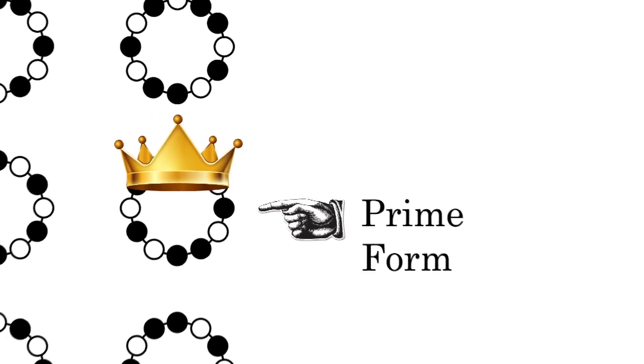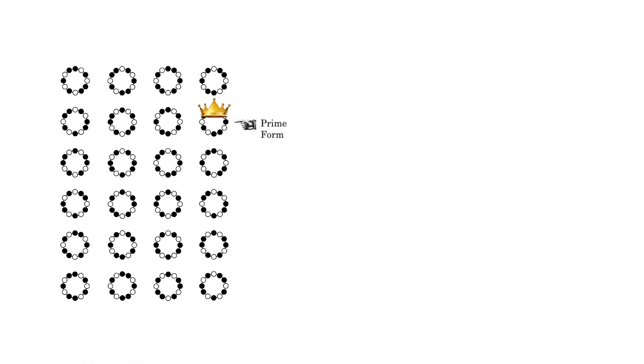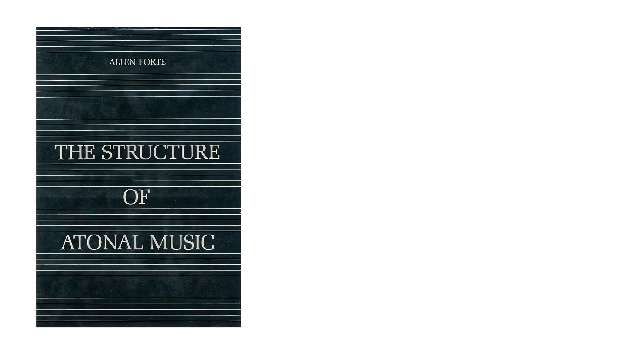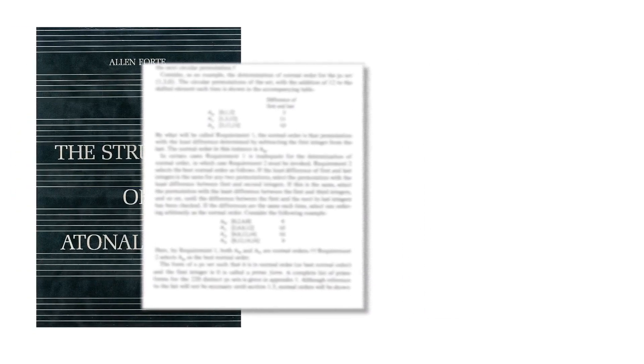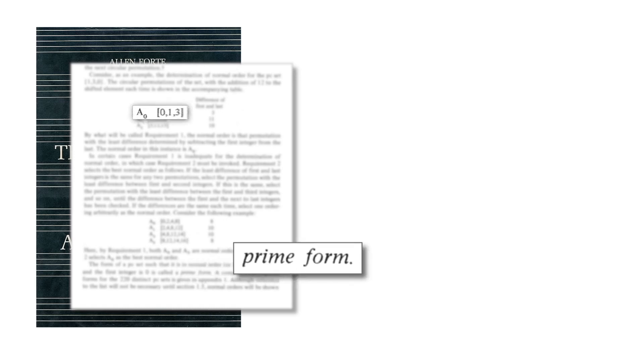Since they are all equivalent it really doesn't matter which one, but it is nice to have a consistent rule for picking which one will be prime. So how do we pick the prime set? Alan Forte suggested an algorithm for choosing the prime form. In his book he describes a method of representing the tones with numbers, then choosing a set where those numbers start with zero and are in the most compact configuration.